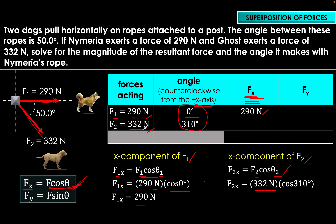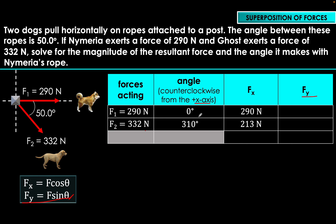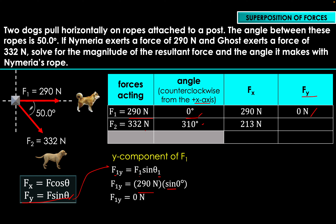Next, we solve for the y-components using the formula Fy = F sine θ, where θ is again measured with respect to the x-axis. For force number one (Nymeria): Fy₁ = 290 Newtons × sine(0°) = 0 Newtons. This is obviously zero because Nymeria's rope is a horizontal force, so it has no vertical component.